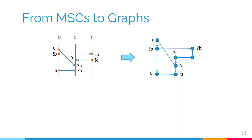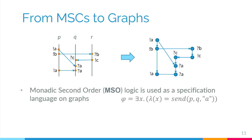Before diving into model checking, I would like to talk about how we can take an MSC and interpret it as a graph. Each event — whether a send or receive event — becomes a node in our graph, and each message arrow becomes an arc in our directed graph. Subsequent events on a process are also linked by an arc. Since we are dealing with graphs, we can use tools from graph theory. For instance, we can use monadic second-order logic as a specification language over graphs. A simple example formula states that there exists a send event from process B to process Q with label A — and evaluating this on our MSC shows it's true because we find two messages from P to Q with label A.